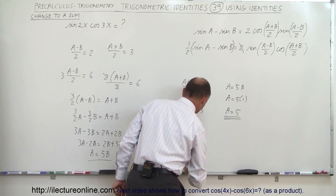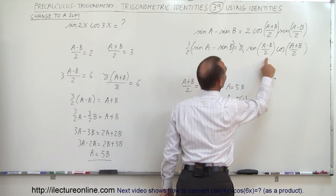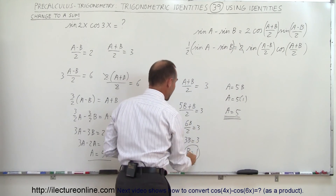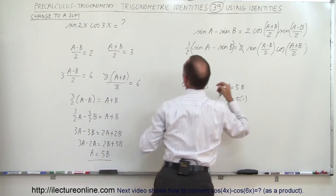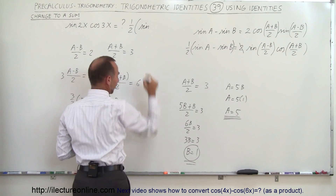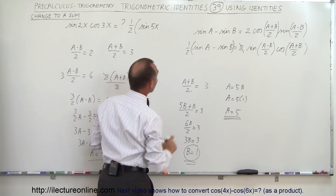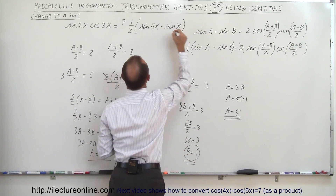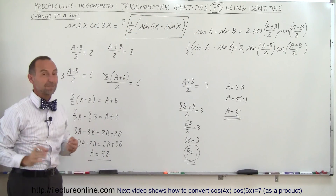Now I have a value for a and b. I know that sine of (a minus b)/2 times cosine of (a plus b)/2 equals this expression. Since a equals 5 and b equals 1, I can write the product as 1/2 times the sine of 5x minus the sine of x. And so this is the equivalent of what I had over there. That's how we do that.